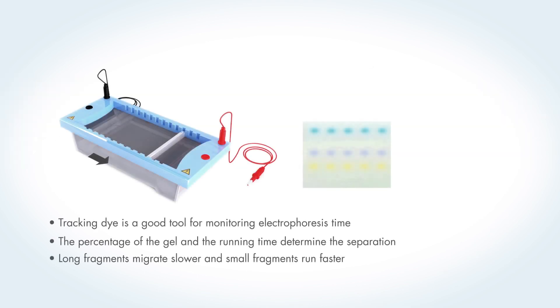The DNA fragments migrate from the negative cathode to the positive anode. Short fragments run faster than long ones, and fragments in a high percentage agarose gel are slower than in a lower percentage gel. The running time is therefore determined by the agarose percentage and the fragment size.